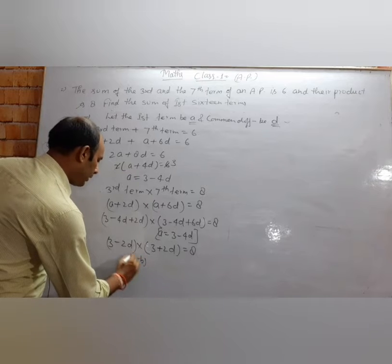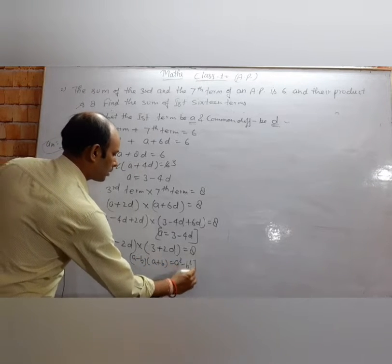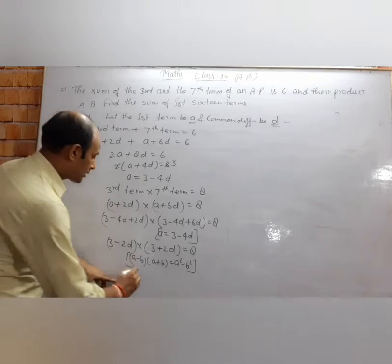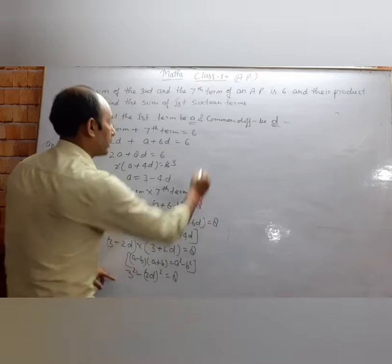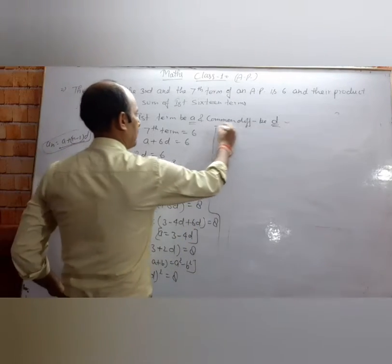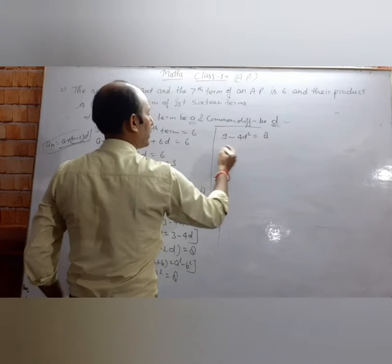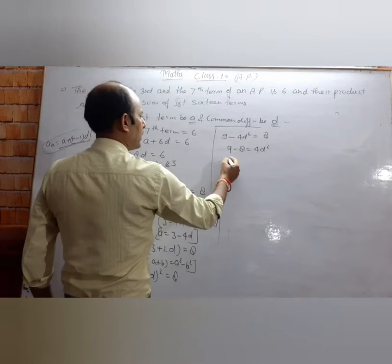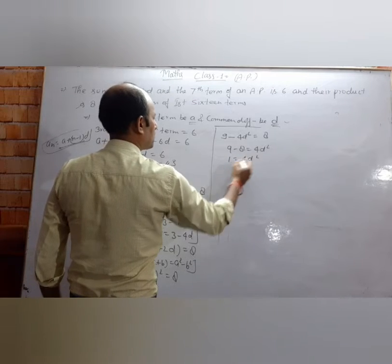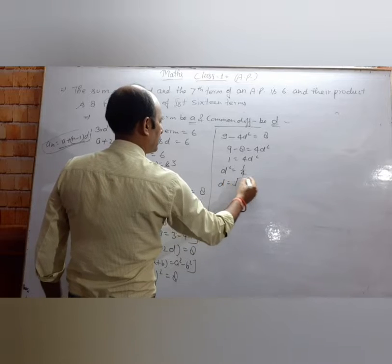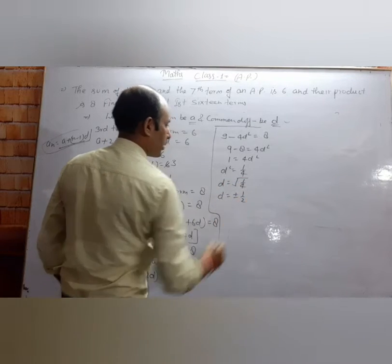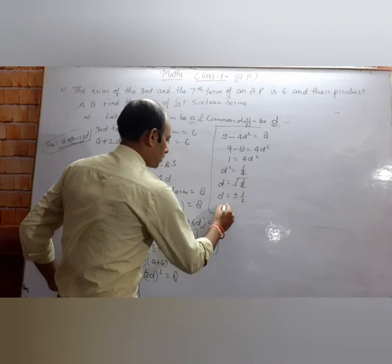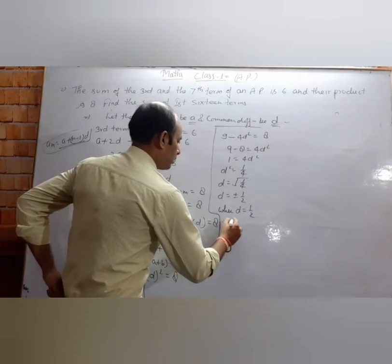Now this is of the form a minus b into a plus b, which equals a squared minus b squared. So we get 3 squared minus 2d squared equals 8, meaning 9 minus 4d squared equals 8. Therefore 9 minus 8 equals 4d squared, so 1 equals 4d squared, giving d squared equals 1/4.